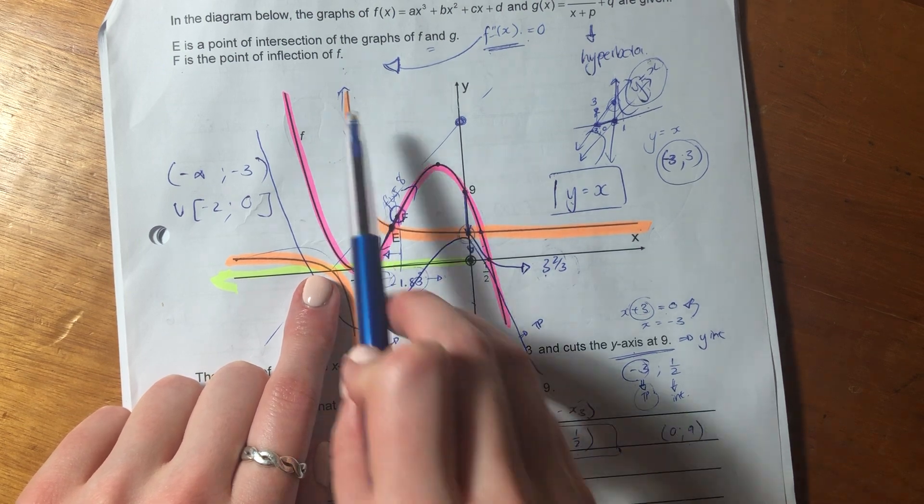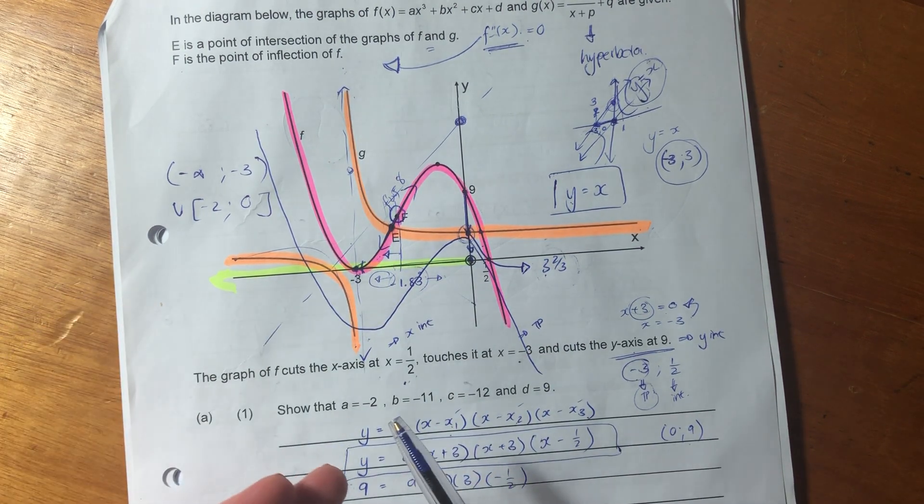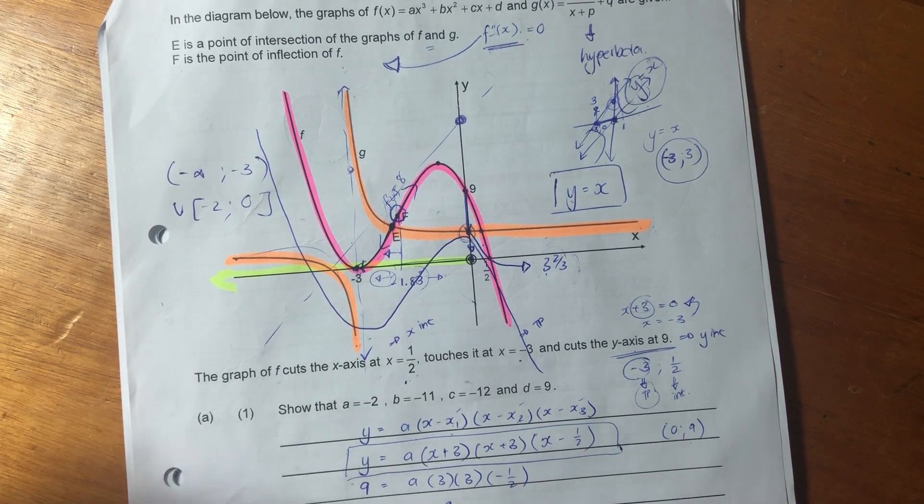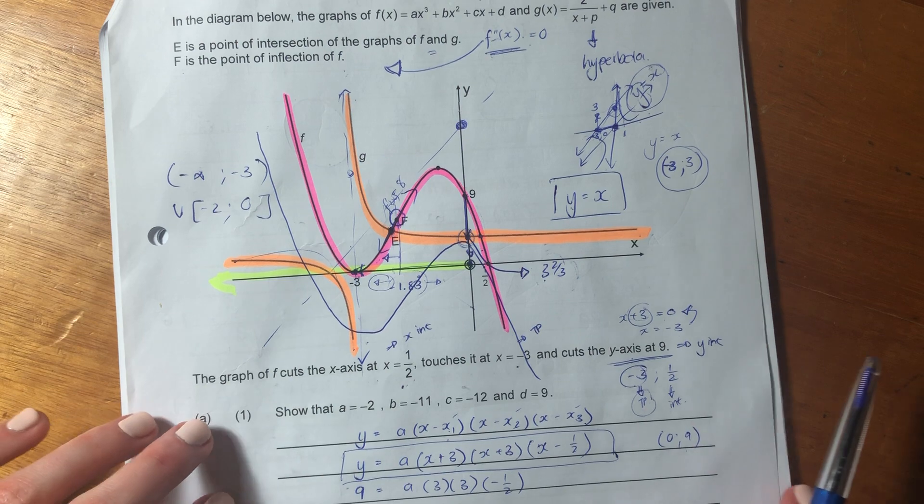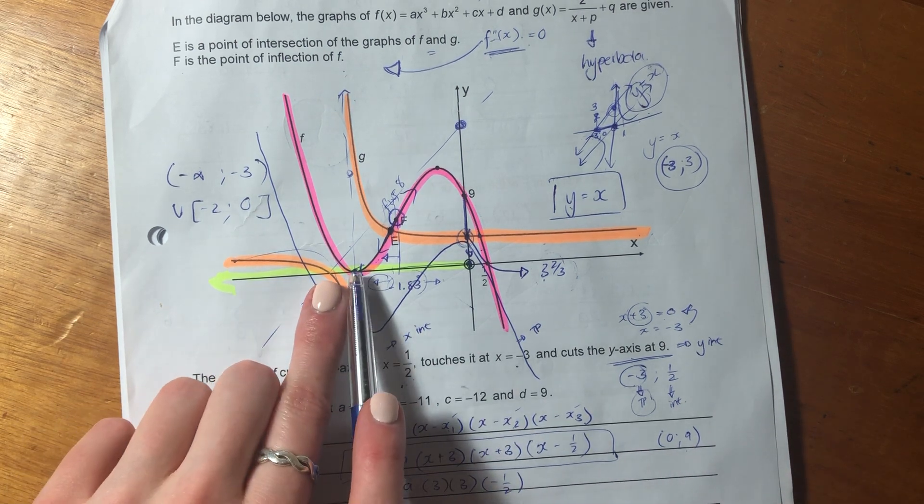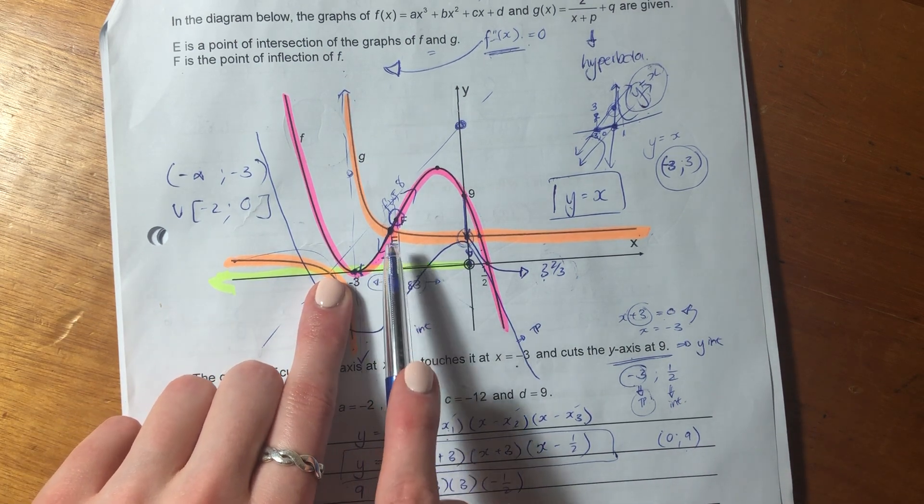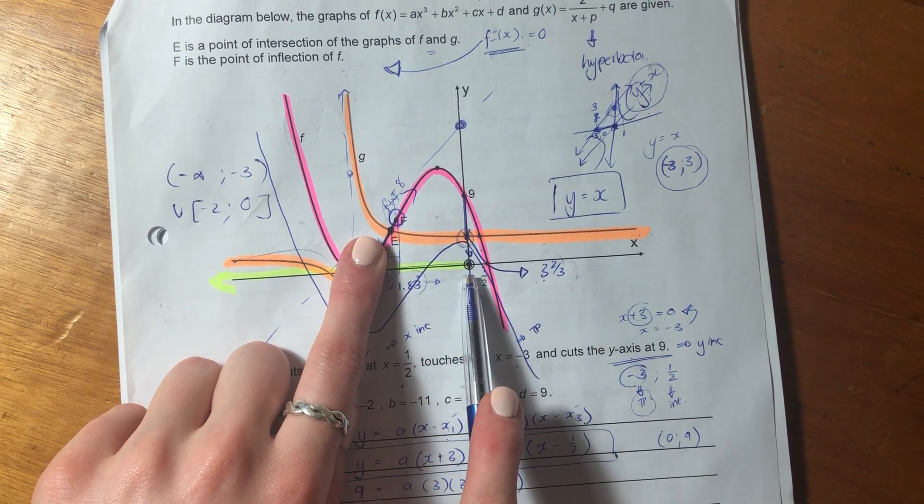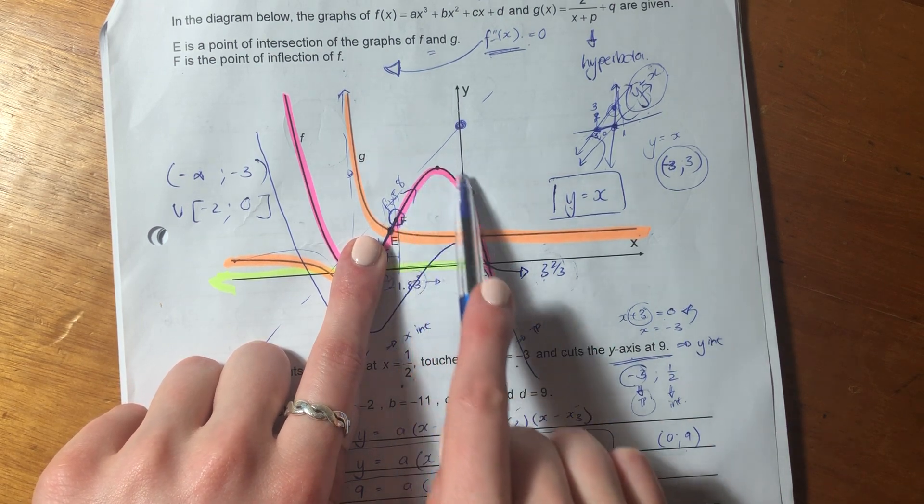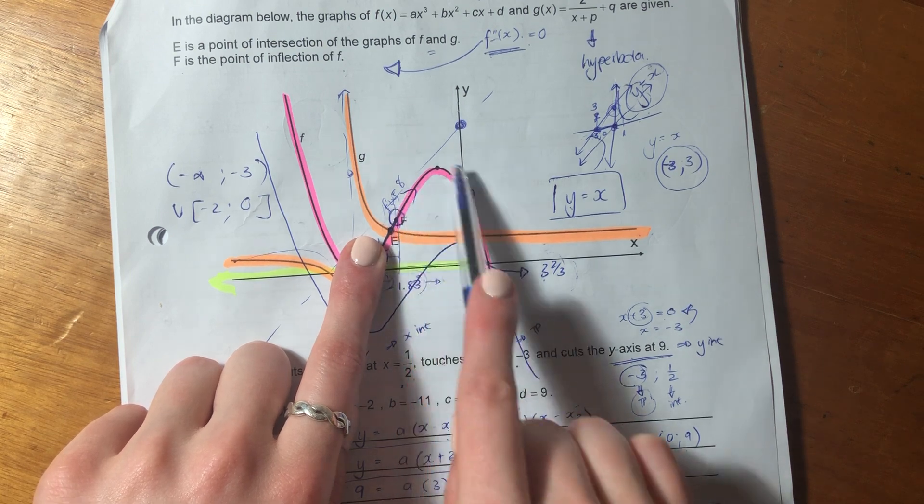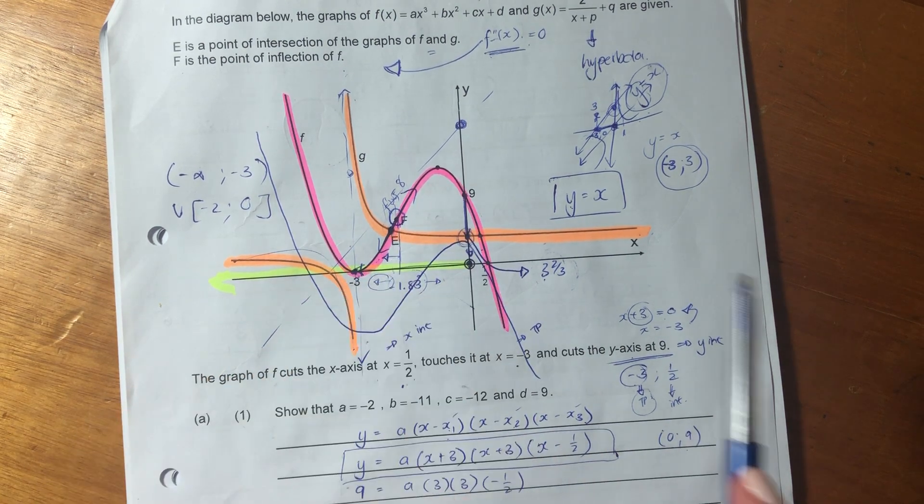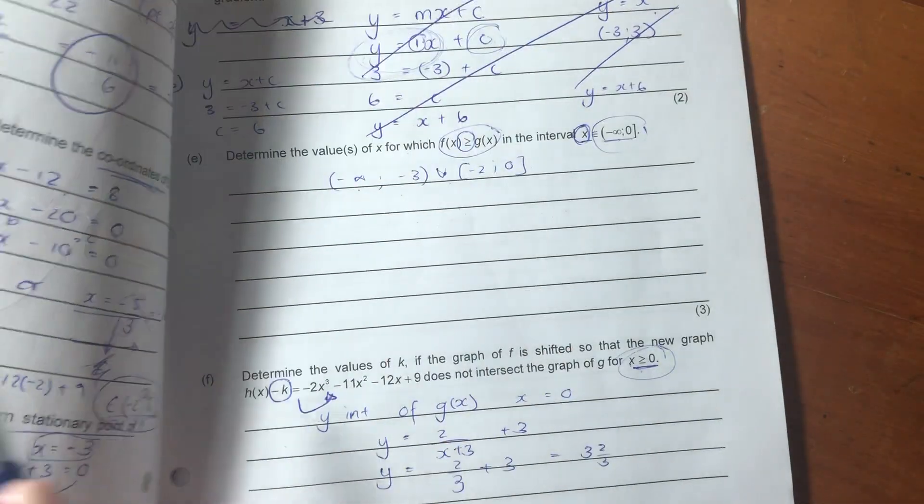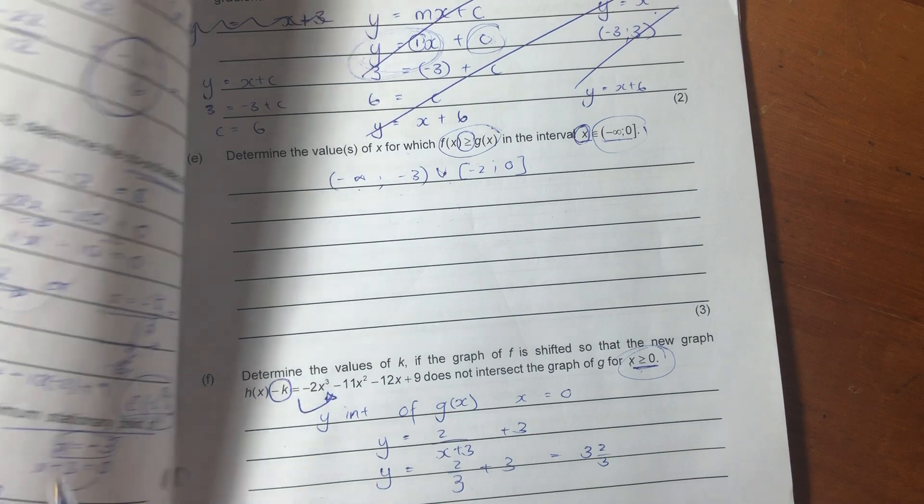So we can see that pink is above orange from negative infinity to negative three. But remember, at negative three, the hyperbola is undefined because that's an asymptote. So I put a soft bracket with negative three to say it's not included because we know that it's not included in the hyperbola graph.